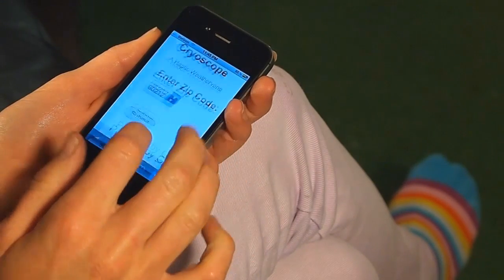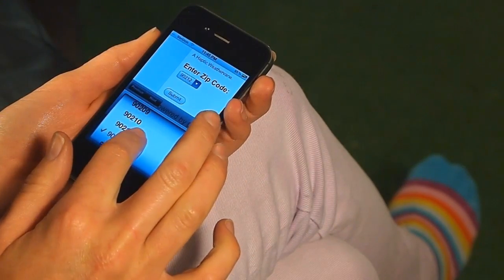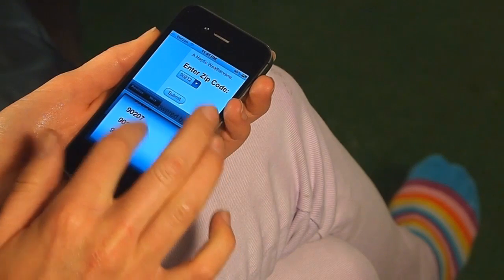Users enter their location into a web app. The cube then automatically adjusts to the forecasted temperature.